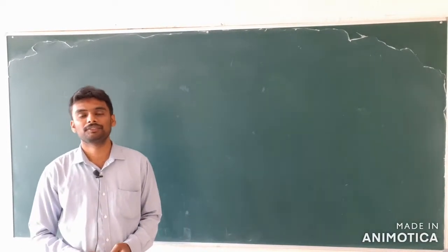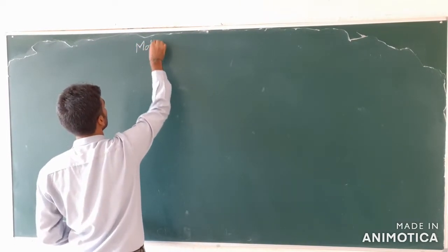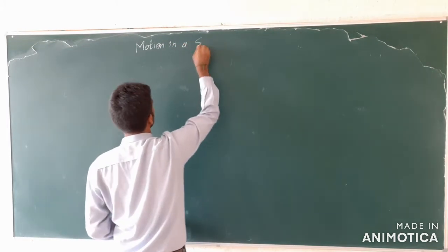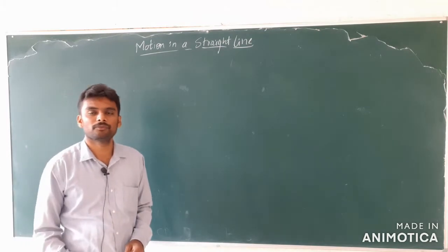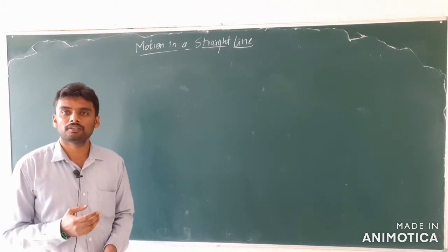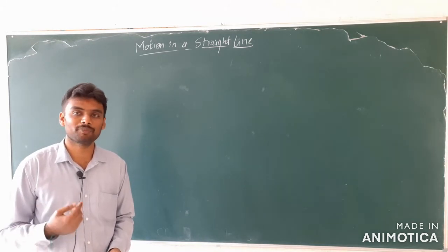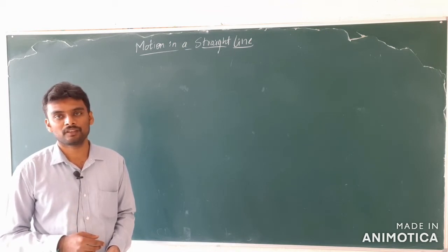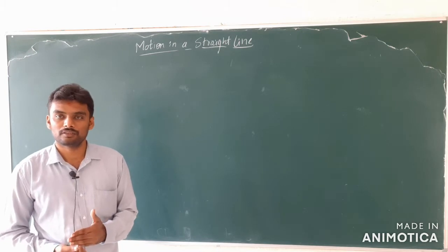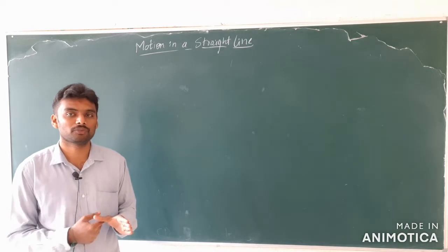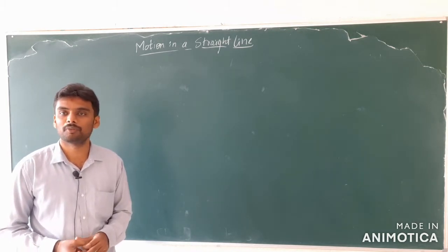Hello students, let us continue our discussion on motion in a straight line. In the last session, we discussed about the position of the body and when the position of the body changes, we took two factors: one is distance, which is also called path length, and the other is displacement. Distance is the length of the path travelled by the body, and displacement is the shortest length between the final position and the initial position. We solved a few problems so that you have a clear idea about distance and displacement.